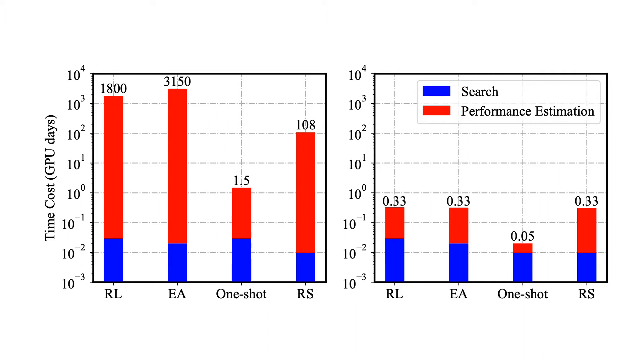By incorporating budgeted performance estimation, we can largely accelerate neural architecture search methods including reinforcement learning, evolution algorithm, random search, and one-shot with negligible performance drop.